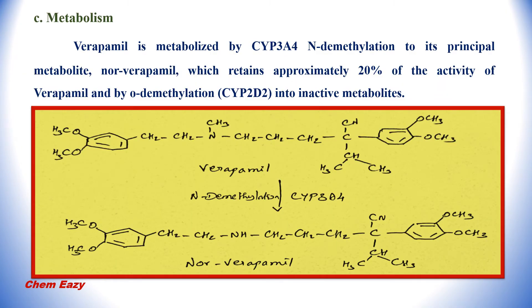Verapamil is metabolized by cytochrome P450 3A4 via N-demethylation to its principal metabolite norverapamil. Norverapamil retains approximately 20% of the activity of verapamil. Here you can see the metabolism by CYP3A4: it undergoes N-demethylation, where the N-CH3 is removed and it becomes N-H, giving norverapamil.